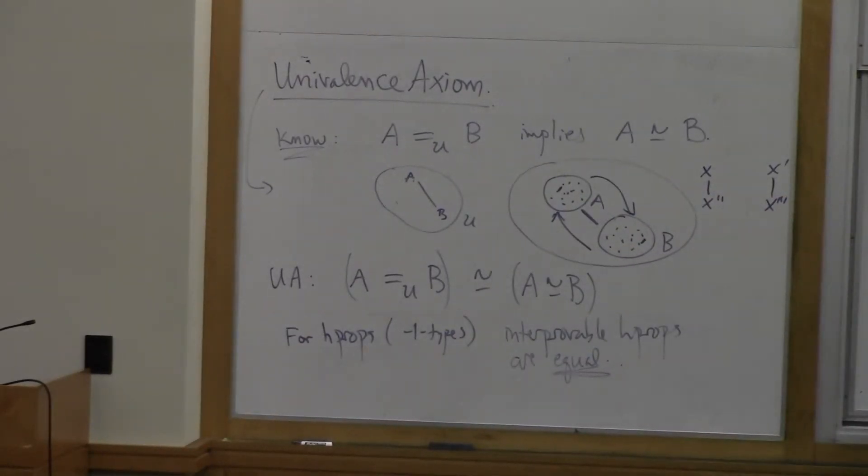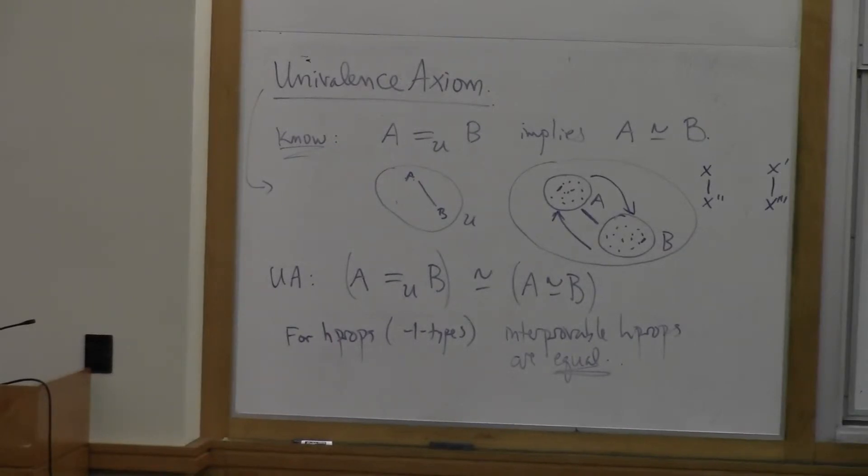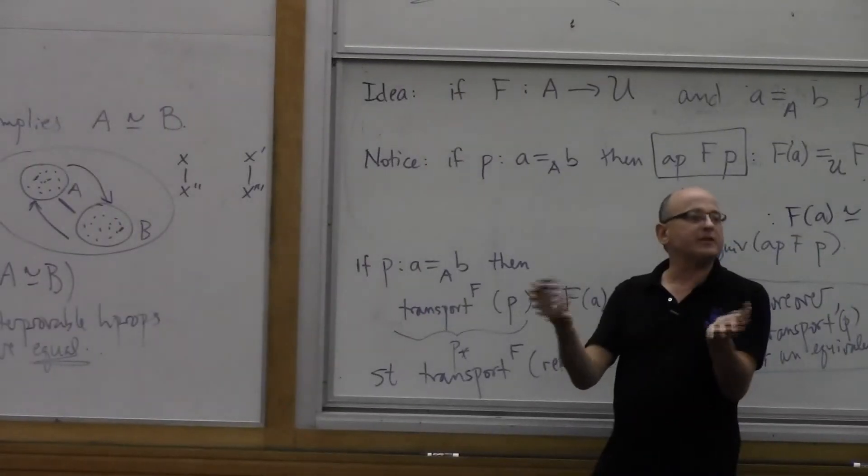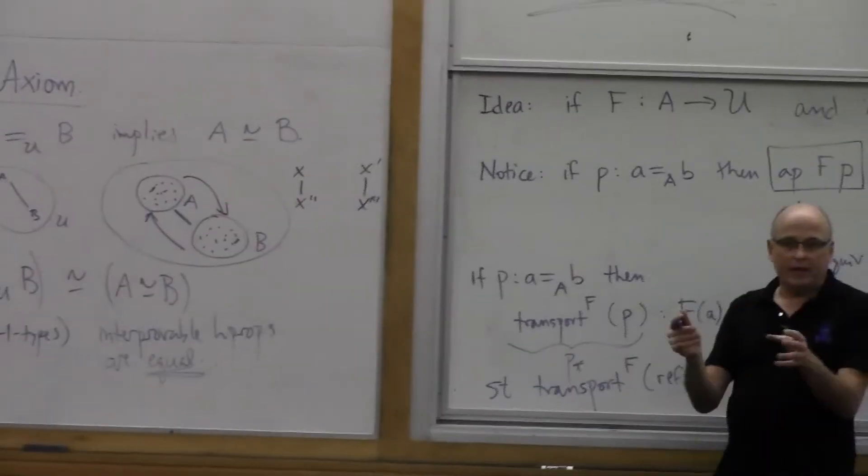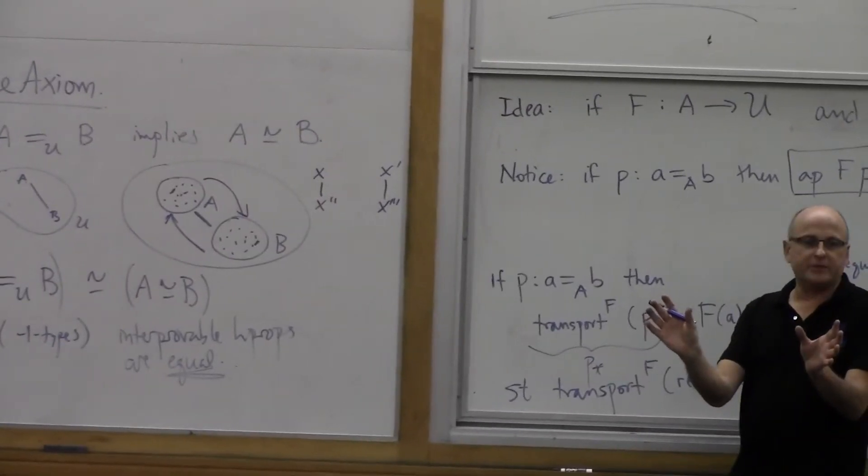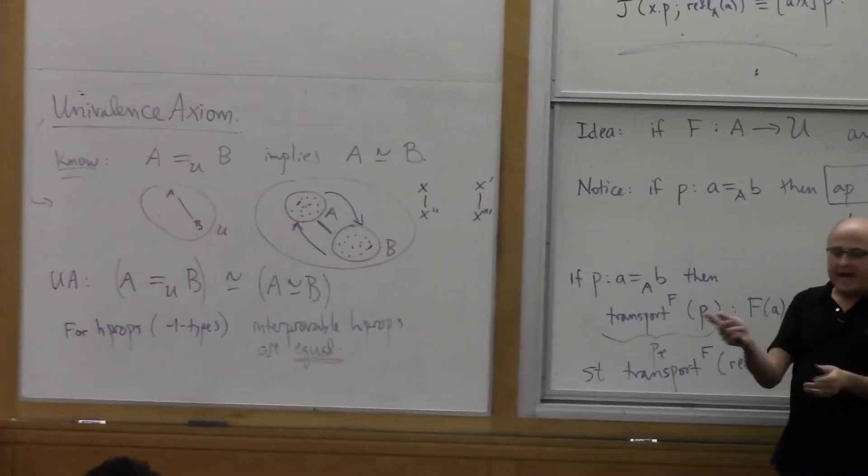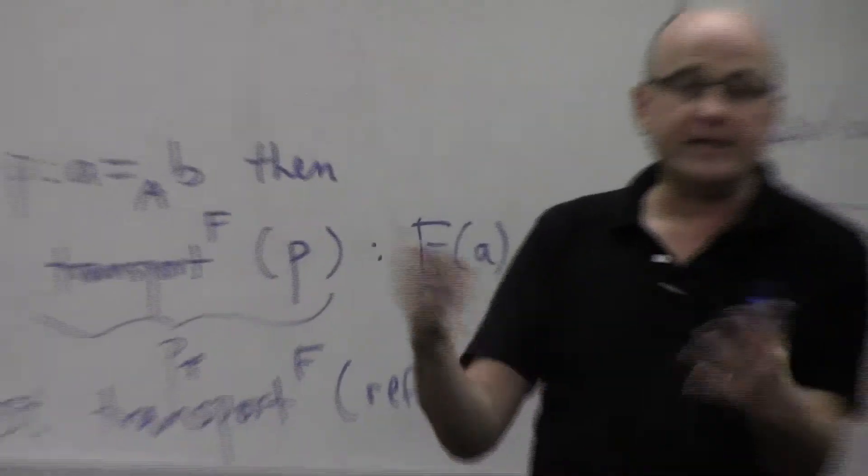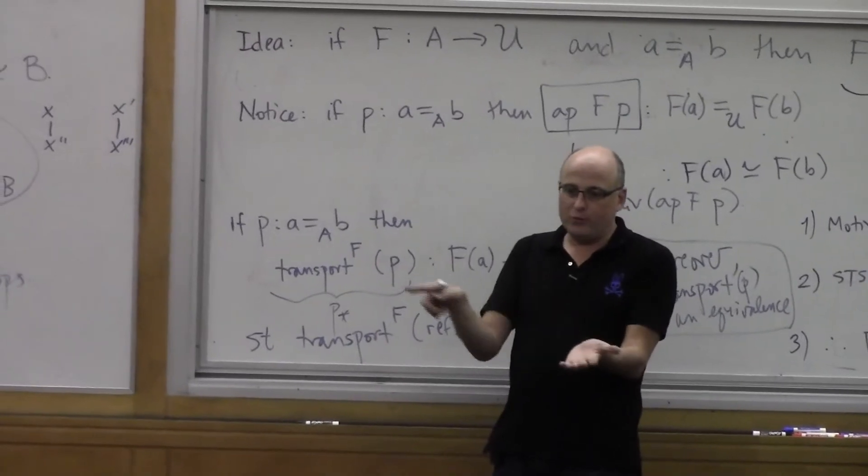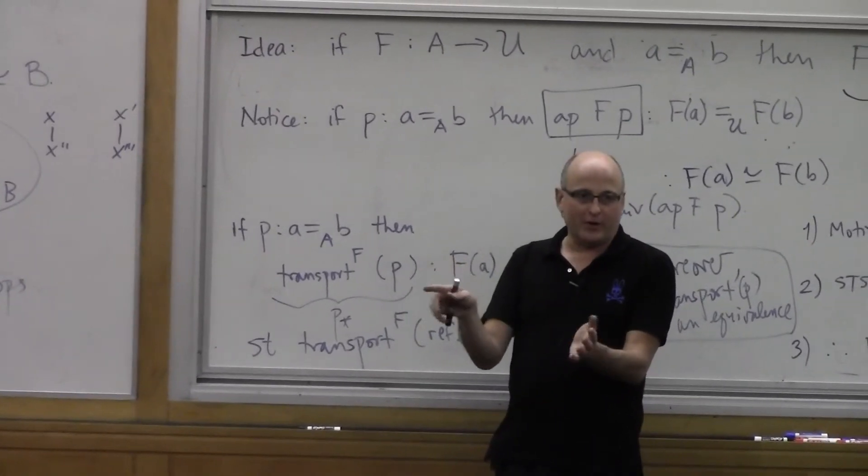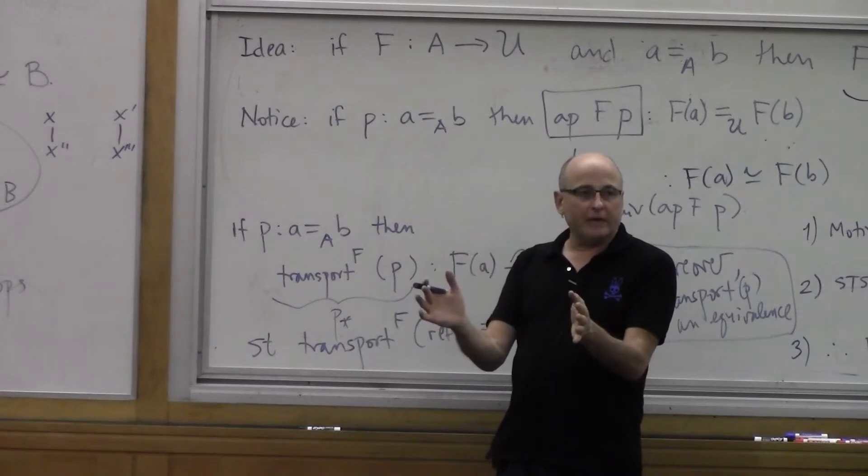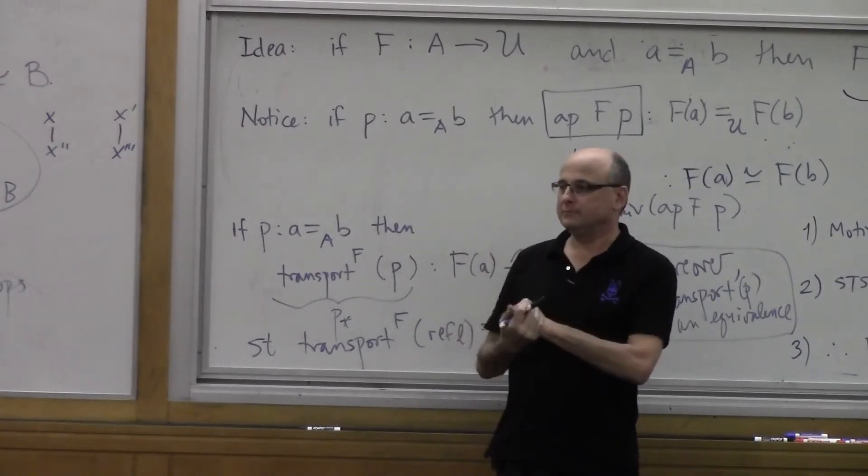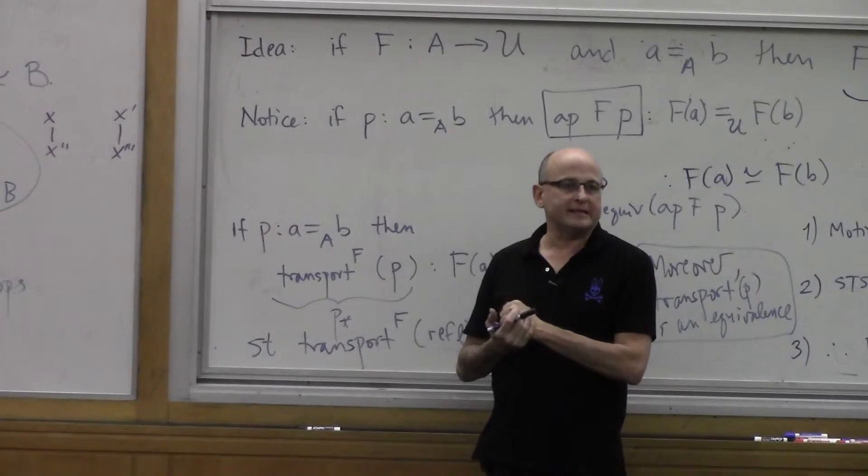So if I can show A if and only if B for types that are so degenerate that they have at most one element. They're sub-singletons, that's the way of saying it. They have at most one element. If I have degenerate types, the types that are sub-singletons, proving A if and only if B means I have a map. If it goes from A to B, there's only one place it can go. And if it goes from B to A, there's only one place it can go. So that's an equivalence because there's no room to not be an equivalence. There's nowhere to go. So if I have interprovable H props, they're equal. One is replaceable by the other in all contexts.